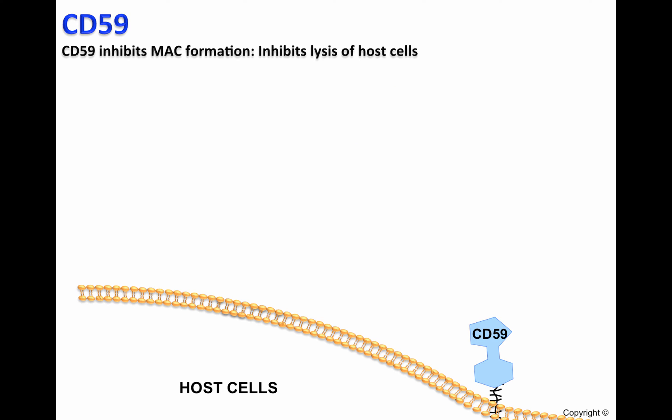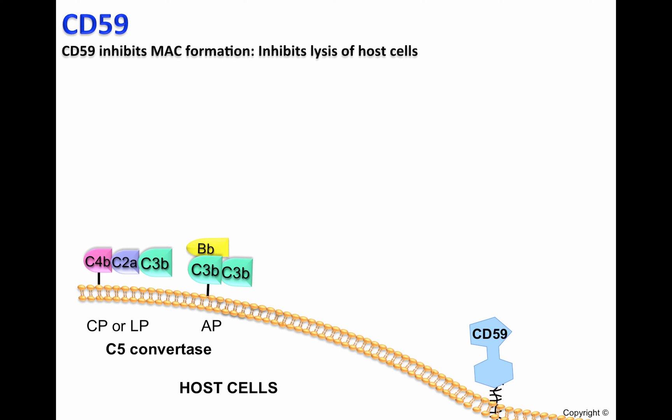In certain circumstances, the complement system can activate on the cell surface of host cells. Such is the case when the C5 convertase of the classical pathway or lectin pathway — C4b, C2a, C3b — or the C5 convertase of the alternative pathway — C3b, Bb, C3b — are attached to the cell surface of host cells.